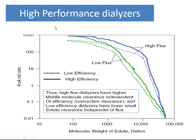There is a difference between high-performance dialyzers and high-flux dialyzers. High-flux dialyzers have higher middle molecule clearance, independent of efficiency. Low-efficiency dialyzers have lower small solute clearance, independent of the flux. In summary: high-flux provides better middle molecule clearance, while low-flux results in lower small solute clearance.